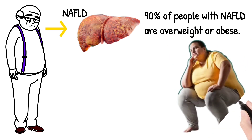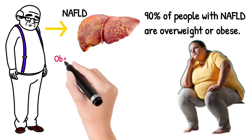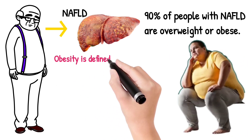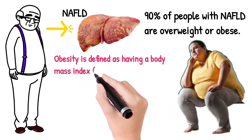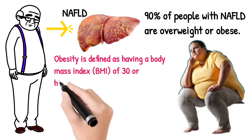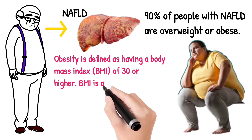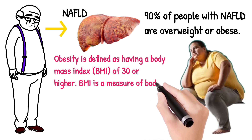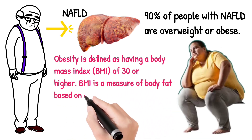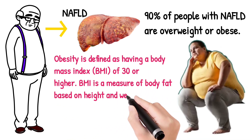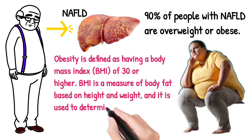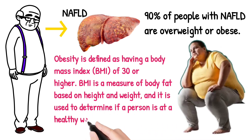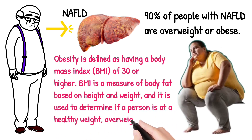Obesity is defined as having a body mass index (BMI) of 30 or higher. BMI is a measure of body fat based on height and weight, and it is used to determine if a person is at a healthy weight, overweight, or obese.